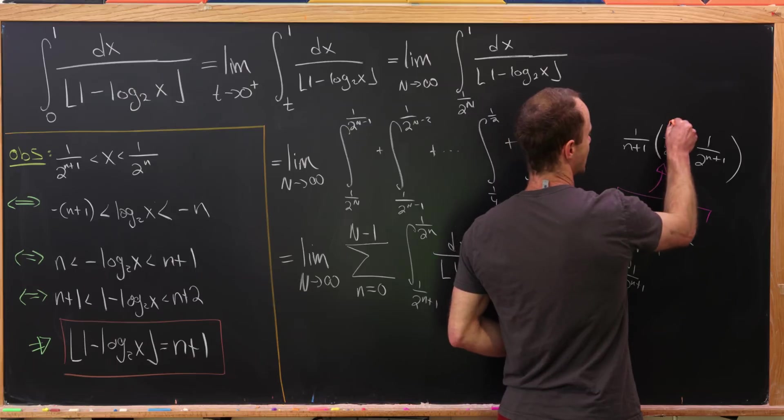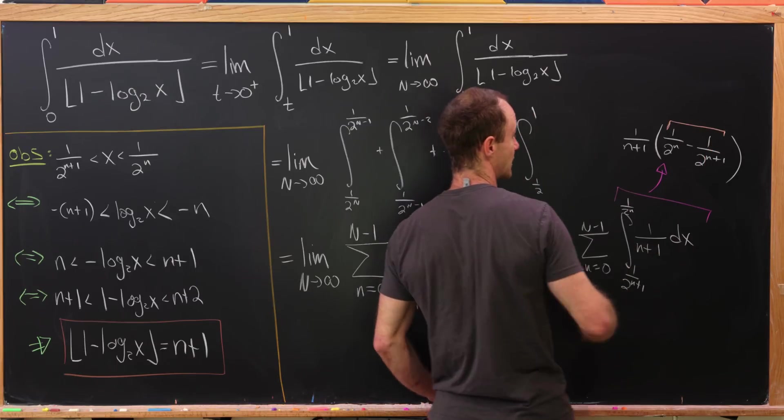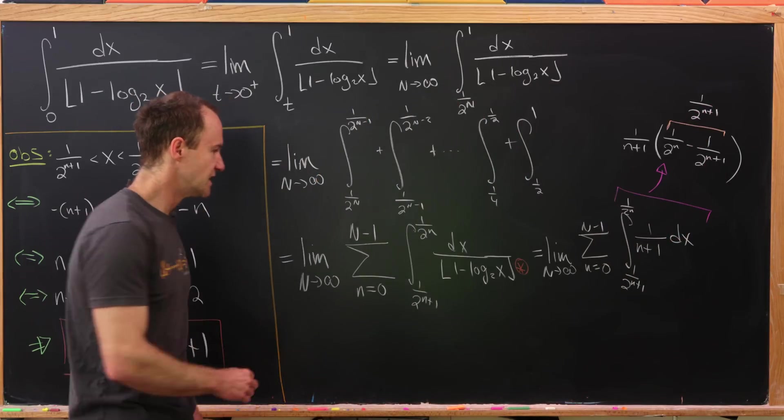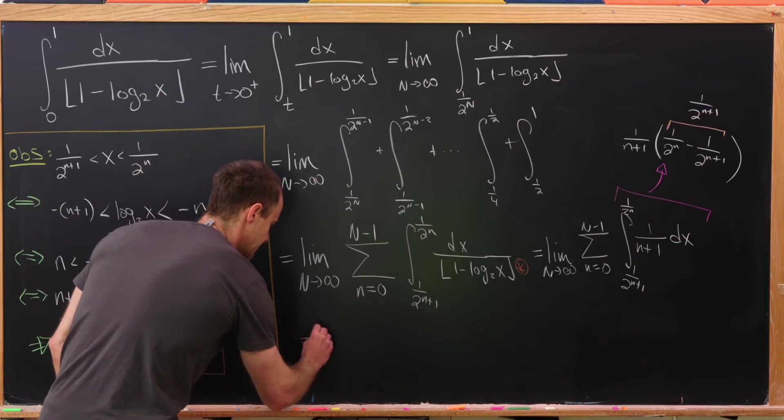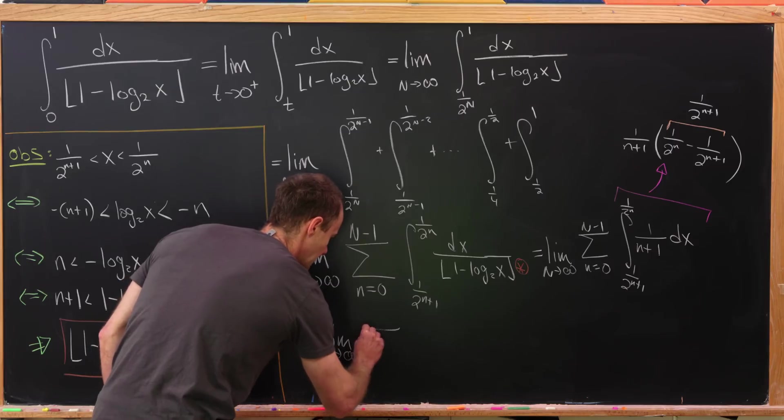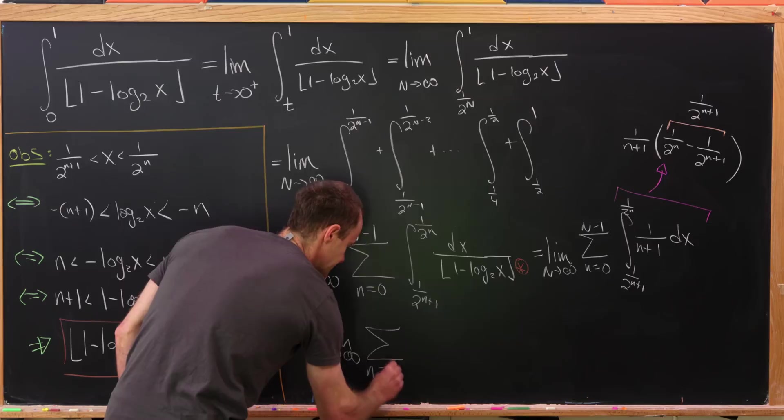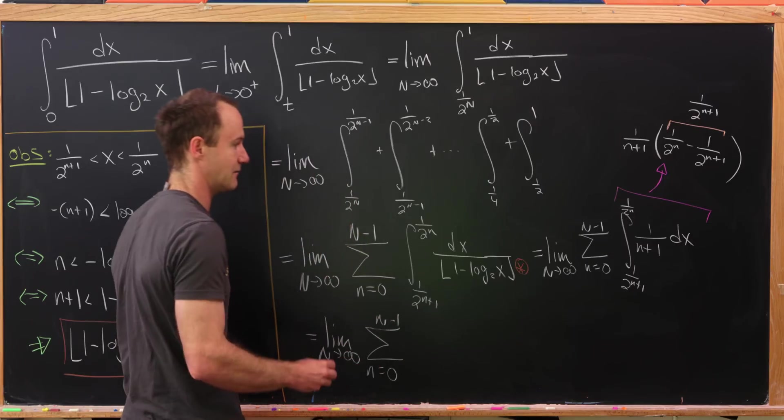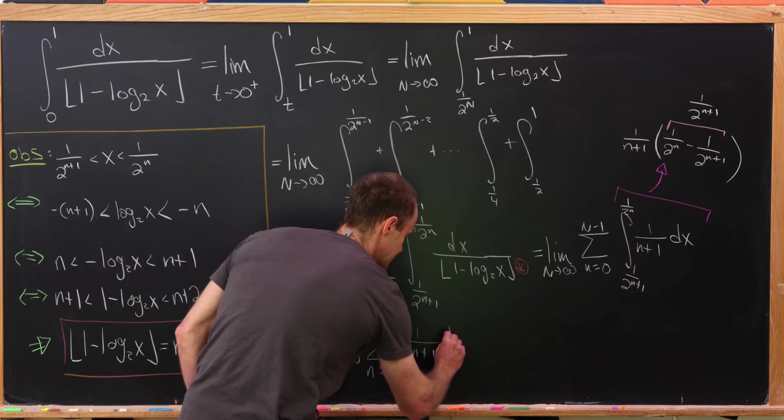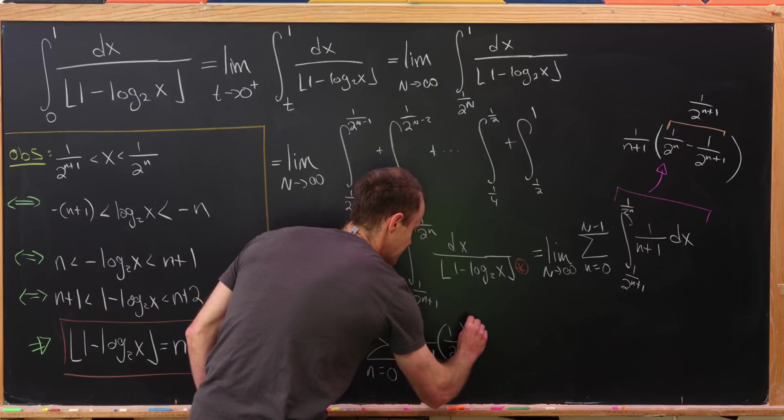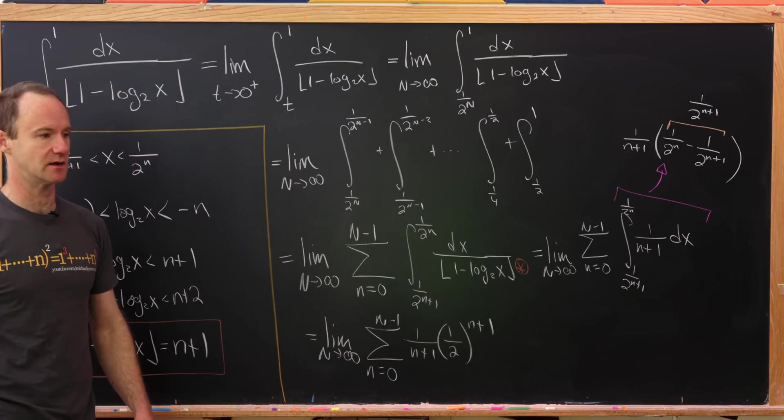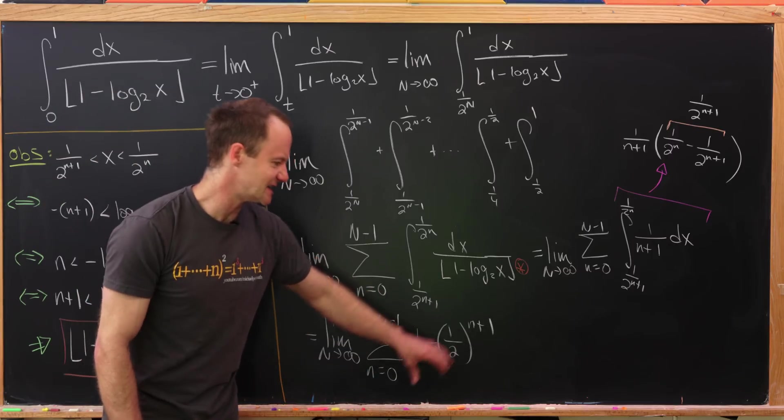But it's pretty easy to calculate this difference here, and we'll see that it's 1 over 2 to the n plus 1. So that gives us the following object. We have the limit as capital N goes to infinity of the sum as little n goes from 0 to capital N minus 1 of, let's see, 1 over n plus 1 times 1 half to the n plus 1. I'm going to write it like that. But look at that, that's the limit of some partial sums, and in fact it's pretty easy to check that this series converges.